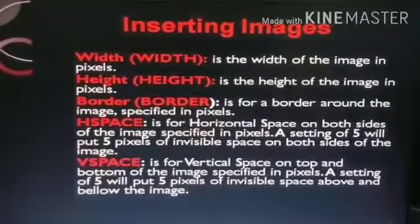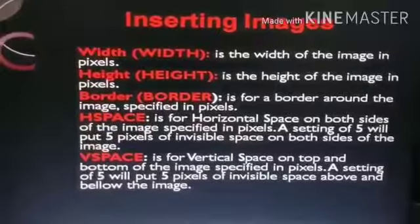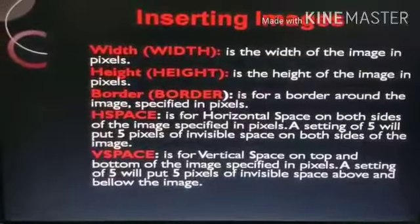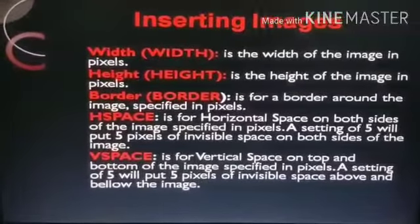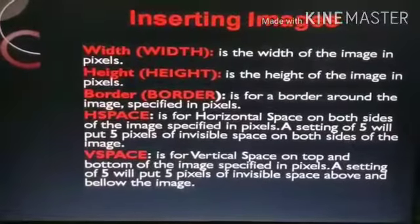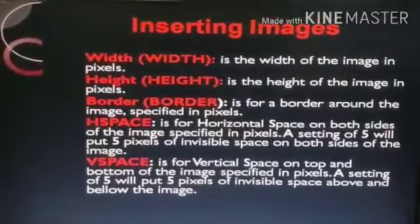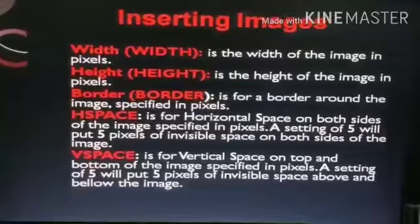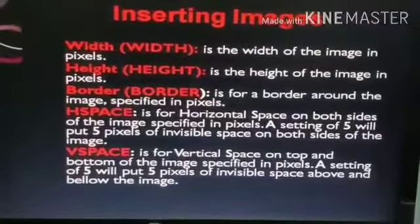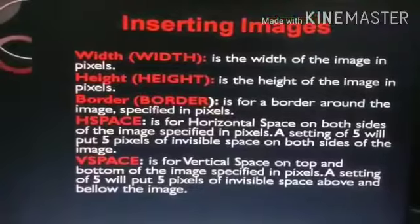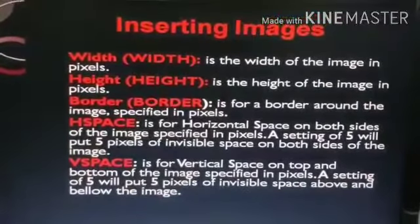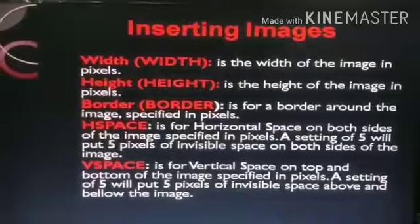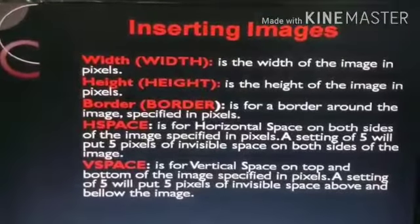One more attribute of the image tag is title. The title attribute contains the tooltip text. जब भी आप mouse के cursor को image के ऊपर लेकर जाते हैं, तो mouse pointer के साथ एक pop-up message box display हो जाता है जिसमें title आ जाता है — just like MS Word या Paint में किसी भी tool पर mouse pointer ले जाने पर होता है. अगर आप चाहते हो कि image के ऊपर cursor ले जाने पर कुछ text display हो, तो title attribute का इस्तेमाल कर सकते हो. Title contains the text message inside double quotation marks.